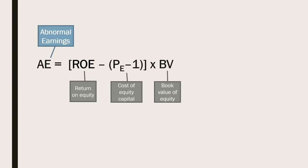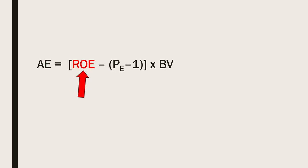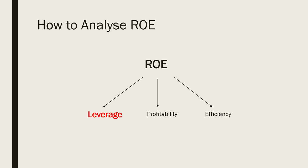One of the accounting drivers of abnormal earnings is return on equity. In turn, there are three parts to a firm's return on equity: leverage, profitability, and efficiency. In this video we will focus on profitability.